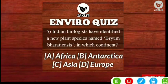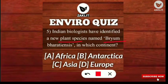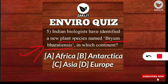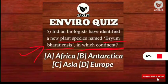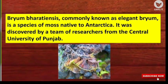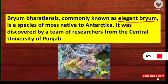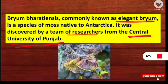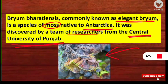The next question: Indian biologists have identified a new plant species named Bryum bharatiense — named from 'Bharat.' On which continent was it identified? The correct answer is Antarctica. Bryum bharatiense, commonly known as Elegant Bryum, is a moss variety identified by a team of researchers from the Central University of Punjab, and it is found in Antarctica.